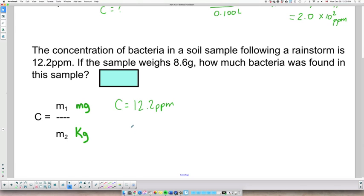If the sample weighs, so the sample is the entire mixture. So it's not M1. M1 is just a solute. It's just a portion of the sample. M2 is the entire sample. So M2 is 8.6 grams.